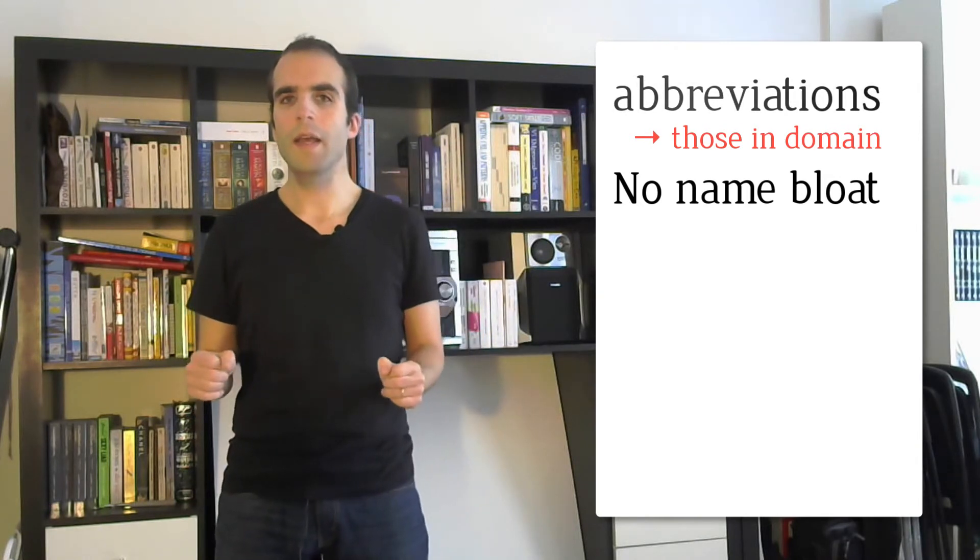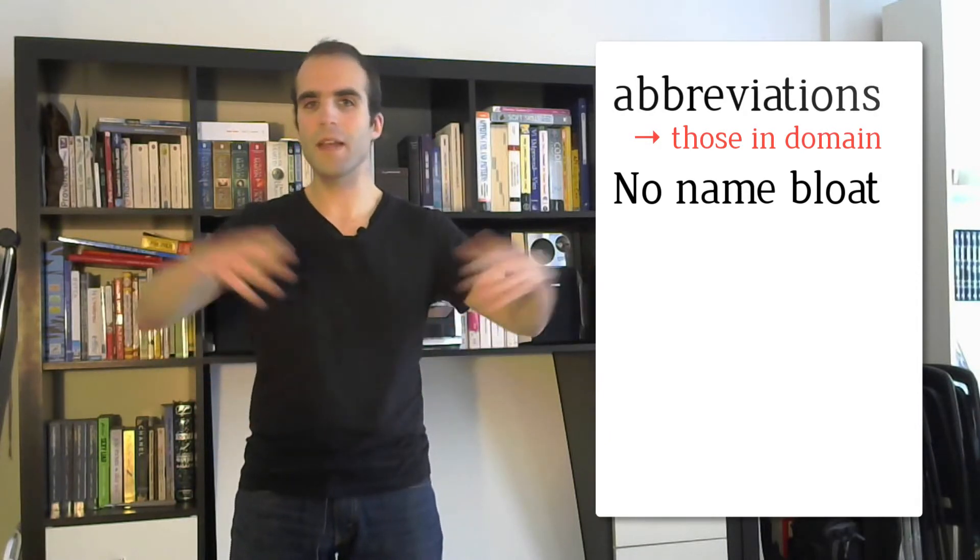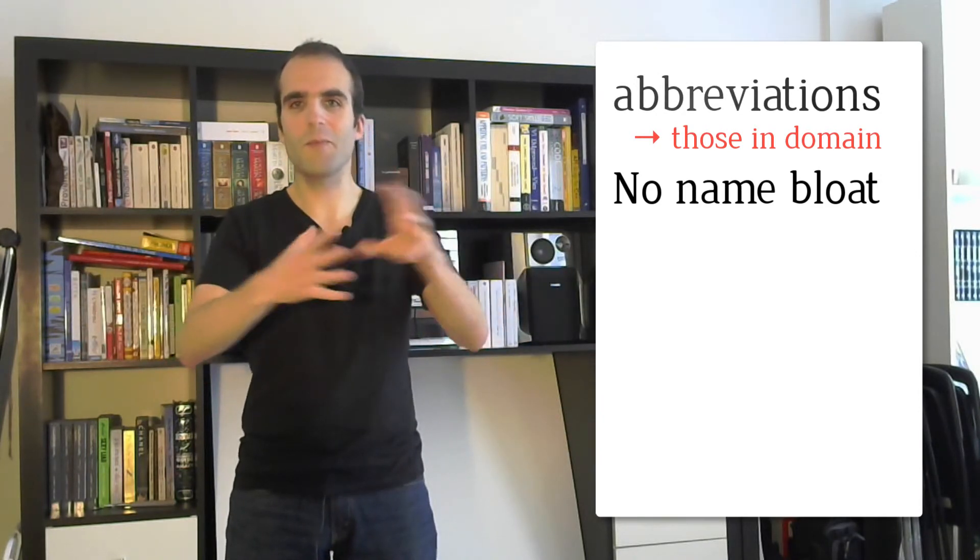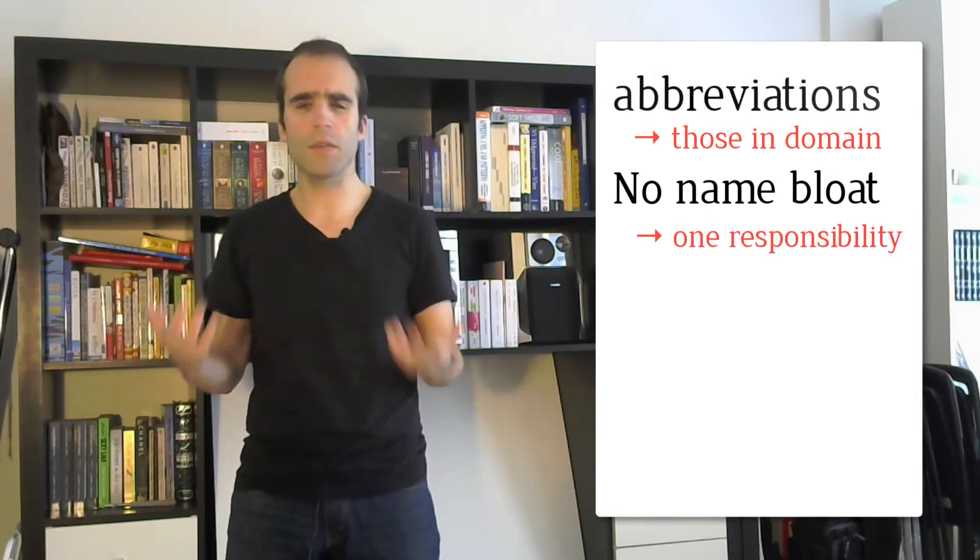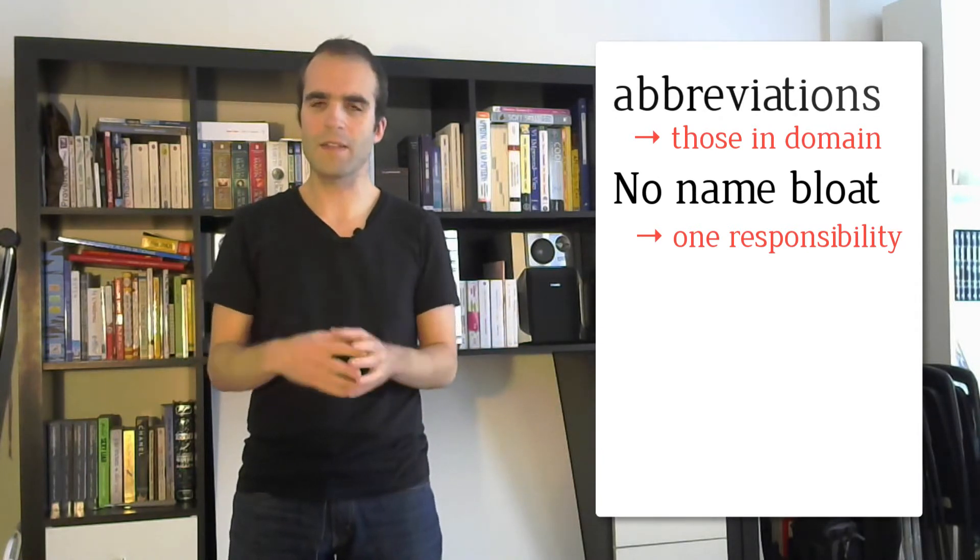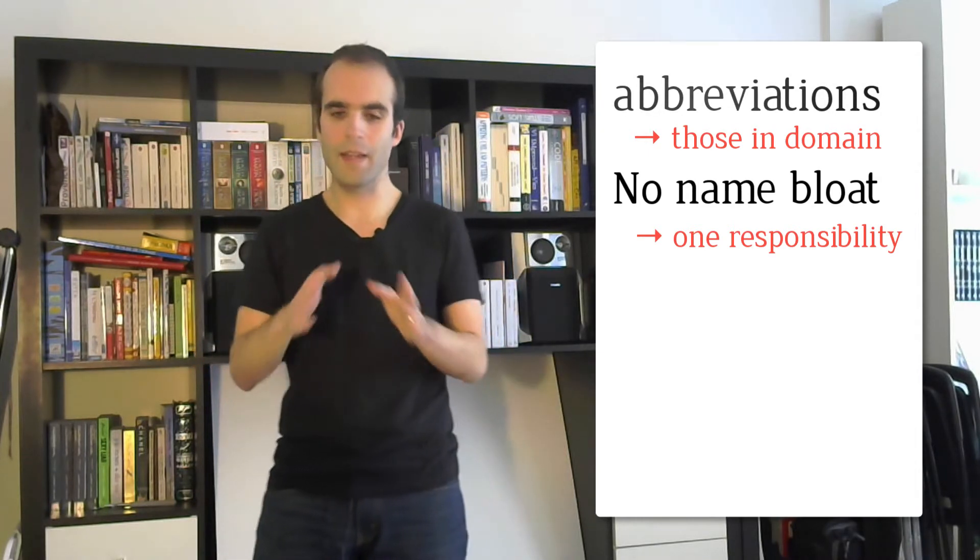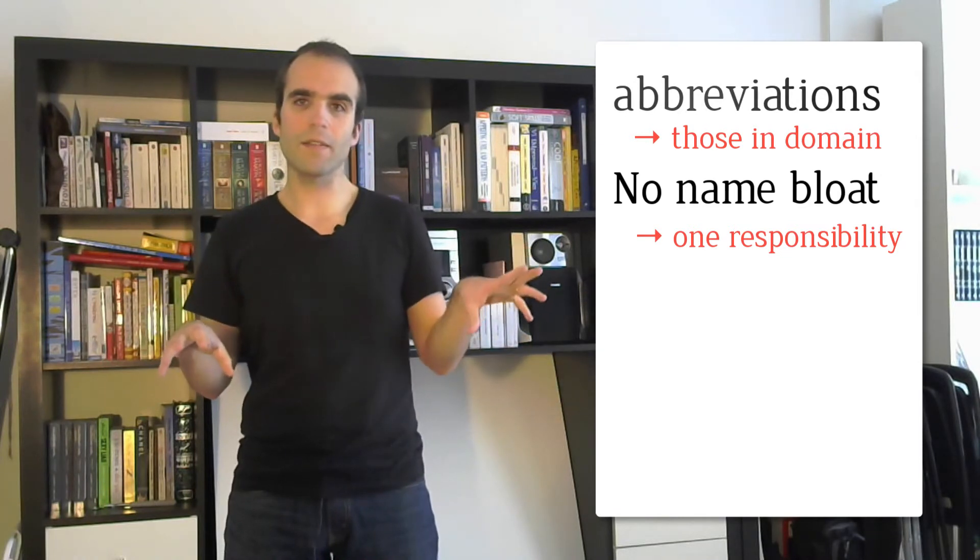One is, if a function is doing too many things, then you need to cram all those things in a name and the names get so big. Rather than making an abbreviation to compact it, it's a good time to think about the responsibilities of a given function or class or variable. That thing behind the name is too big because there are several things in it. That's refactoring time - split things and you've got smaller things with smaller names.